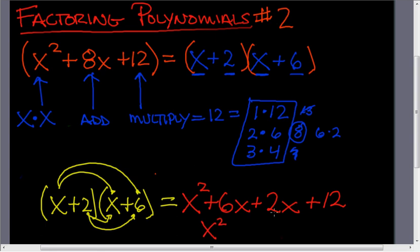And this can be simplified. The middle terms are like terms. We can combine them. 6x and 2x makes 8x. And then there's a plus 12. Same as what we got above. So x squared plus 8x plus 12 is exactly the same as x plus 2 times x plus 6.